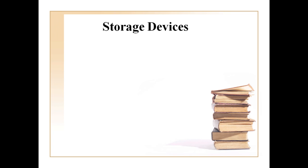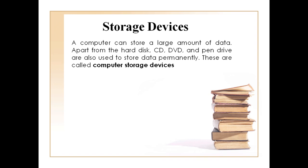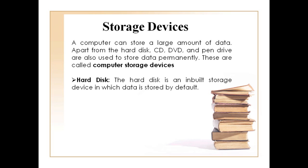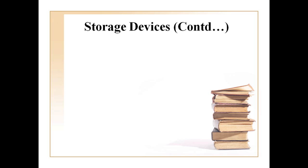The next category is storage devices. A computer can store a large amount of data. All the data and information is saved in its hard disk. Apart from the hard disk, we have CD, DVD, pen drive, and so on to store data permanently. These are called computer storage devices. The hard disk is an inbuilt storage device in which data is stored by default. It looks like a small box fixed inside the CPU cabinet.